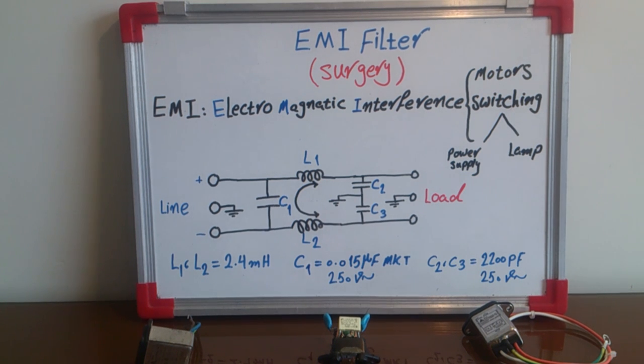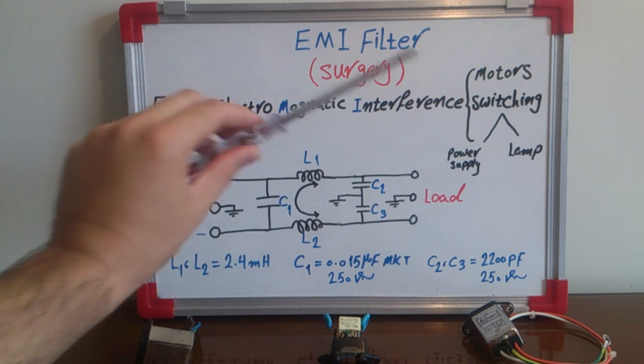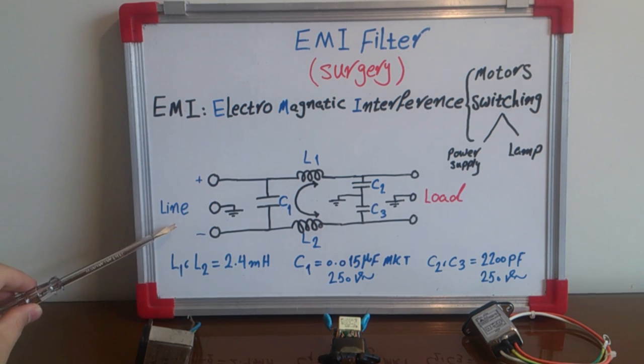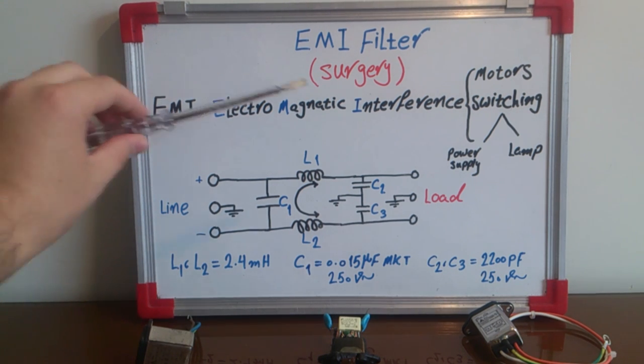The circuit diagram of the EMI filter is shown here. This diagram has two sides: line side and load side. The line side connects to your line like your home grid line, and the load side connects to your load.